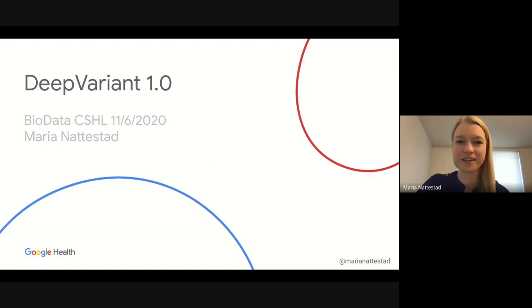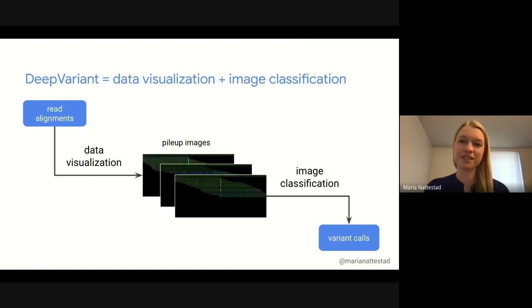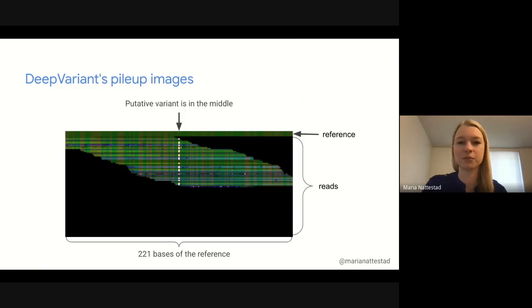So jumping right in, I've always been interested in visualization of genomic data. When I was joining the DeepVariant team in 2019, I was really excited because DeepVariant works by using data visualization combined with image classification. It takes read alignments, visualizes the data into pileup images, and then uses a convolutional neural network to classify the images into variant calls, and outputs final variant calls in a VCF file.